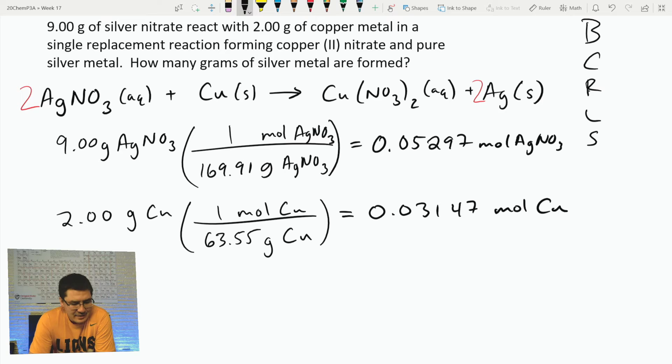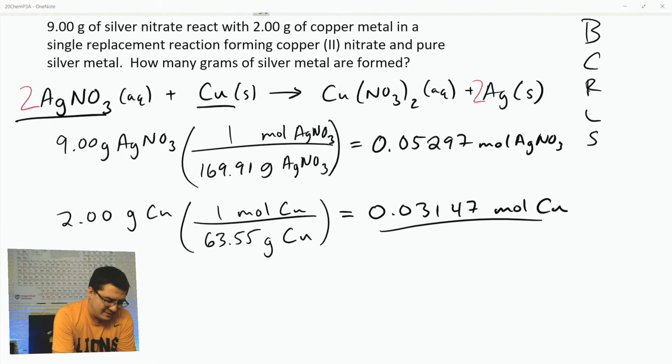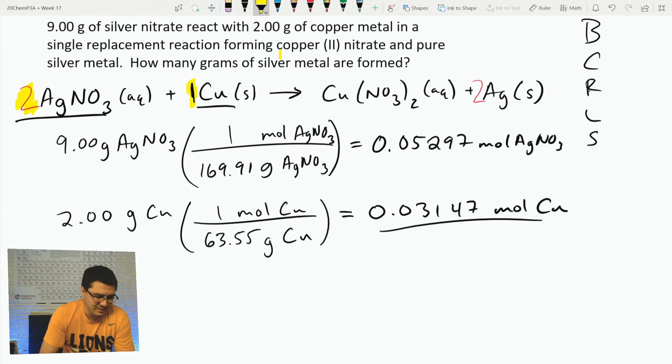So I've converted to moles, done with B and C. Next thing is I need to check my ratio - that's the R. You'll look and be like, okay, I have less copper, 0.03 versus 0.05. But I look at this and I'm like, here's silver nitrate and here's copper. I need to have a 2 to 1 ratio, but comparing this to this I do not have a 2 to 1 ratio. Twice as much copper would have been 0.06 something, but I only have 0.05 something.